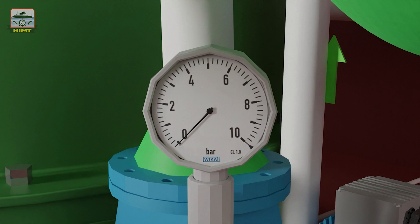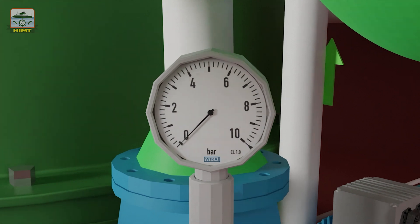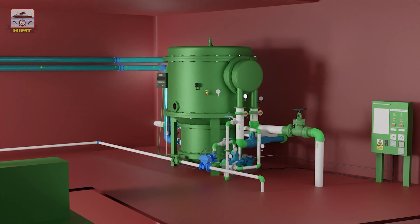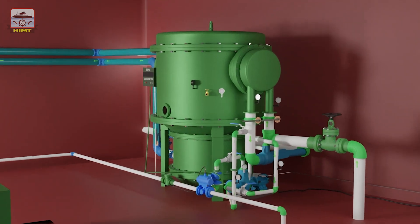These indicating instruments collectively enable operators to monitor and regulate the fresh water generator, ensuring its efficient and reliable operation for water production. Now let's see the step-by-step operation of a fresh water generator. Let's dive in.